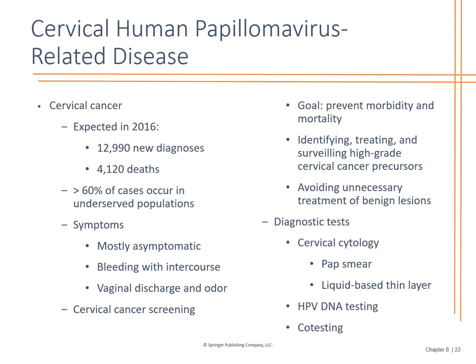When looking at the statistics, we look at the disparities of health — underserved populations have greater than 60% of these cases. Most are asymptomatic, though some can have bleeding with intercourse that they may not think anything of. This is why cervical cancer screenings are so important: identify those abnormalities, high-grade cervical cancer precursors, and refer them out if you continue to have abnormals. For cervical cytology, make sure you're doing your pap smear correctly — don't use surgical lubrication because that can prevent you from getting enough cervical cells. We also look for STDs and get cultures while doing that pelvic exam.